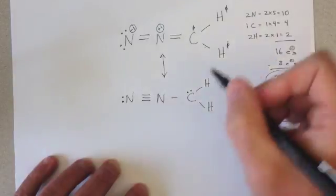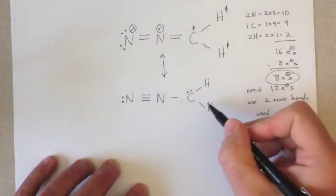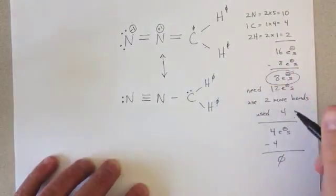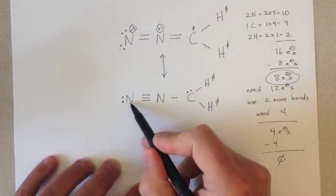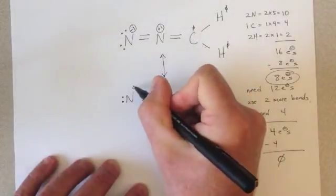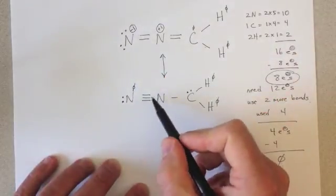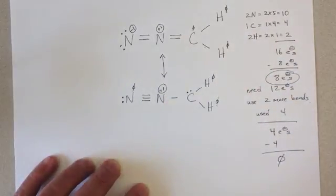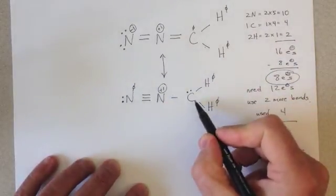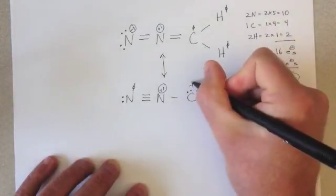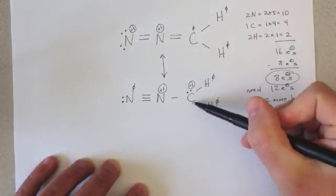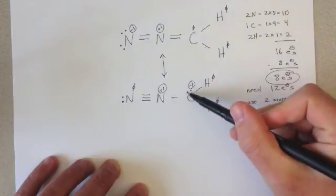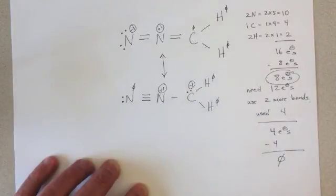So, let's look at the formal charge of this resonance structure. Each of these hydrogens are the same. This nitrogen now has a formal charge of zero. This nitrogen remains with a formal charge of plus one. And this carbon has a formal charge of minus one. Four valence electrons, minus one, two, three bonds, minus one, two lone pair electrons, minus one.